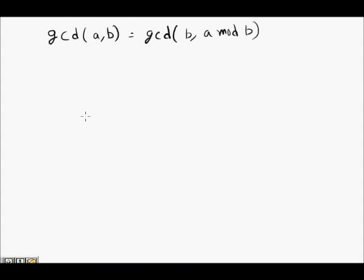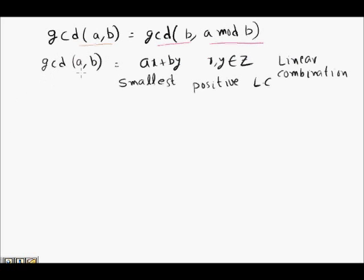We have to prove that GCD(A, B) equals GCD(B, A modulo B). First, a key fact from number theory: the GCD of two numbers A and B is the smallest positive linear combination of A and B, expressible as AX + BY where X and Y belong to the integers Z.